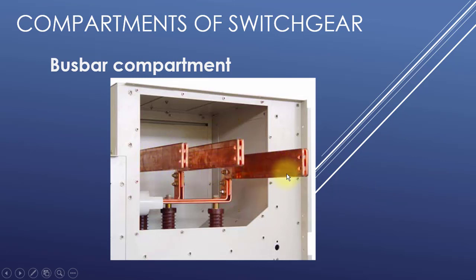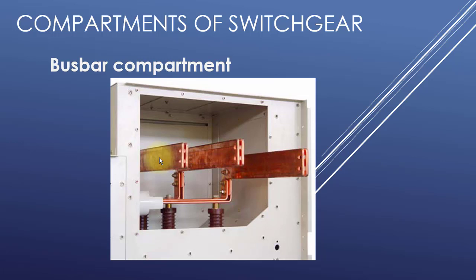This is the bus bar compartment and these are the buses. For example, this is the red bus, this is the yellow bus, and this is the blue bus. The marking of phases is also done. Here you can see the buses are taken out of the compartment, and here the buses of the neighboring MV switchgear compartment can be connected together.